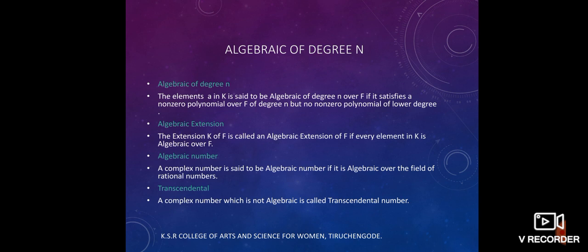Algebraic number. A complex number is said to be algebraic number if it is algebraic over the field of rational numbers.